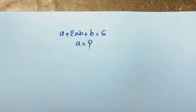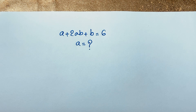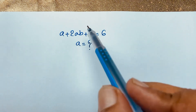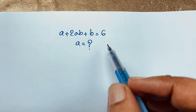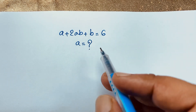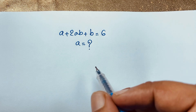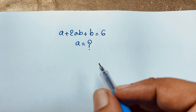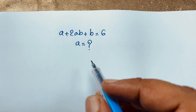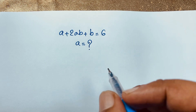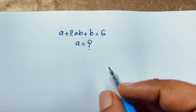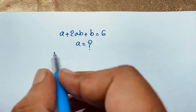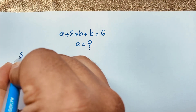Hello everyone, welcome to Rasha's classroom. Today we have solved a nice math problem. The question is: a + 2ab + b = 6. We need to find a and b, where a and b are positive integers. So let's start.